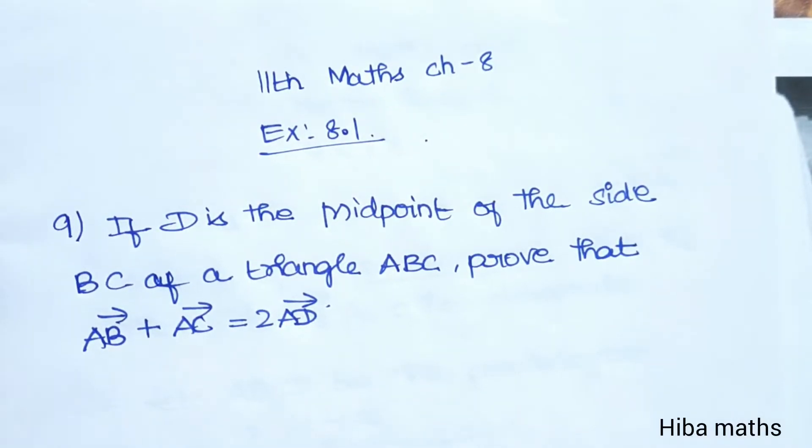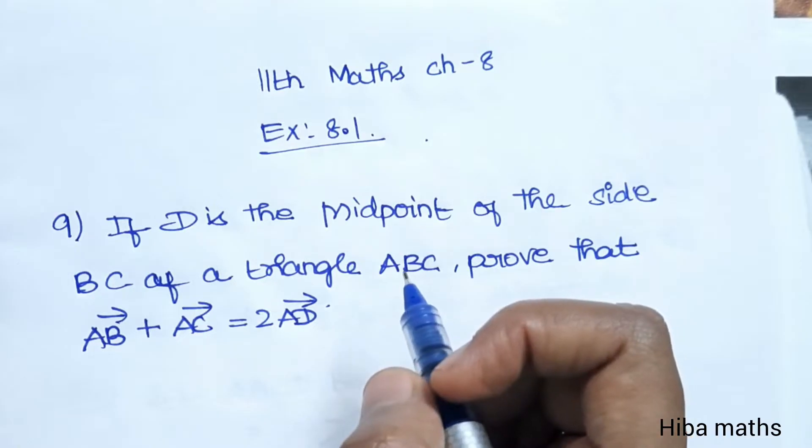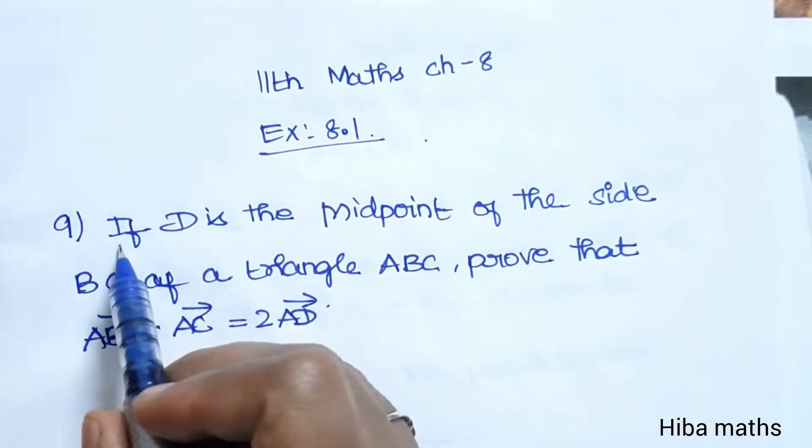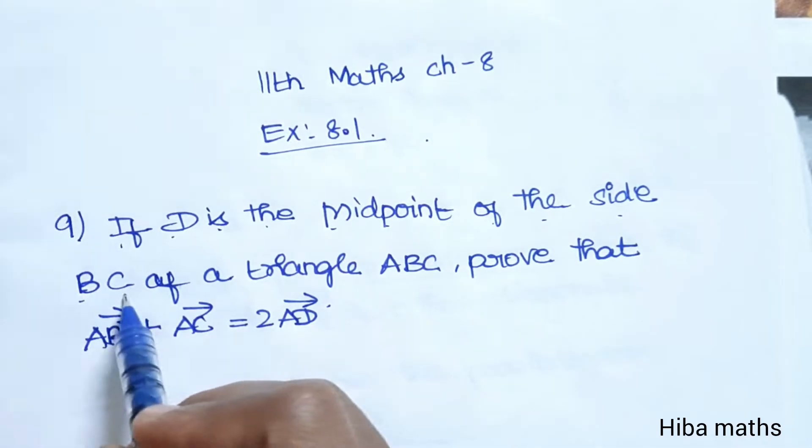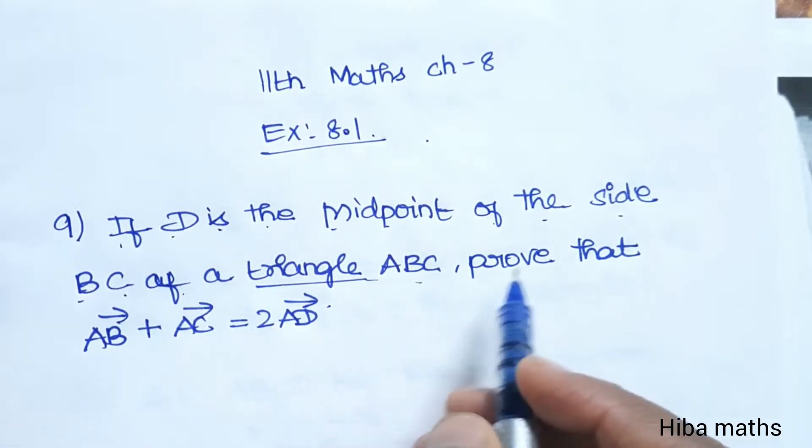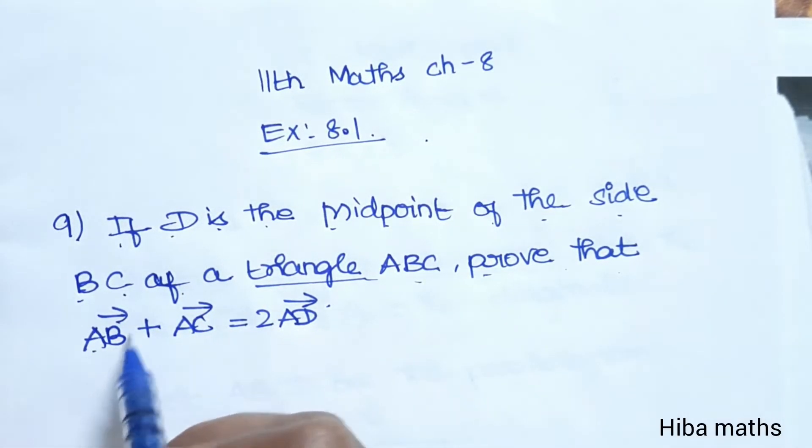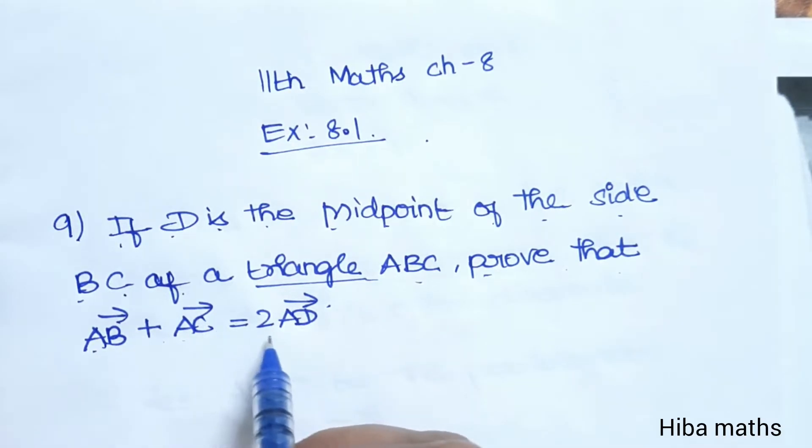Hello students, welcome to Hiba Maths, 11th standard maths chapter 8, exercise 8.1. In the 9th question: If D is the midpoint of the side BC of triangle ABC, prove that AB vector plus AC vector is equal to 2 times AD vector.